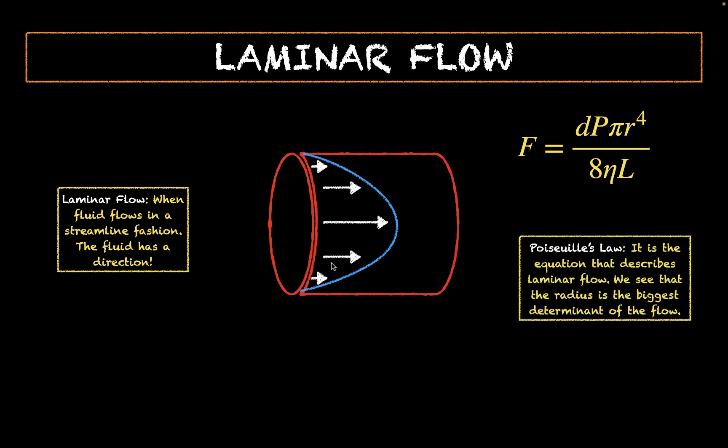We can calculate laminar flow using Poiseuille's law. Flow is directly proportional to the difference in pressure and the radius — the greater each of these, the greater the flow rate. This makes sense because a larger radius means lower resistance, and by Ohm's law, lower resistance means greater flow. In the denominator, flow is inversely proportional to the viscosity of the fluid (eta) and the length of the tube (L).